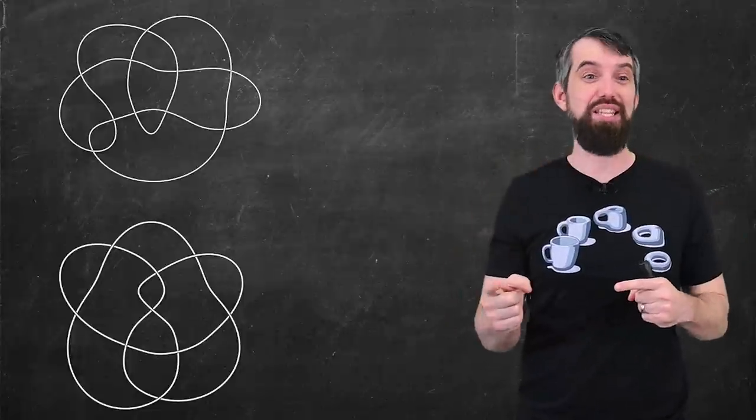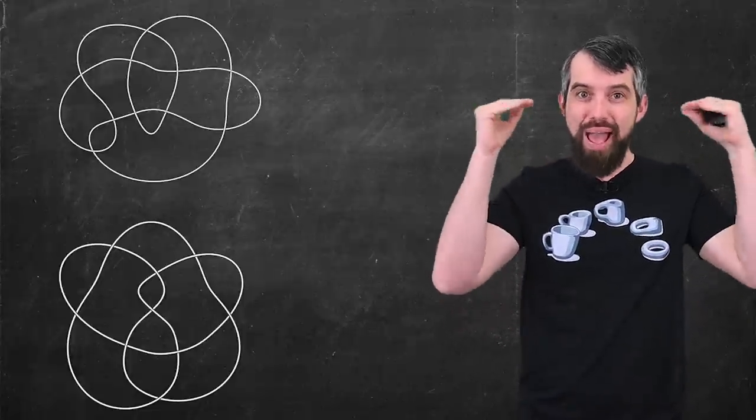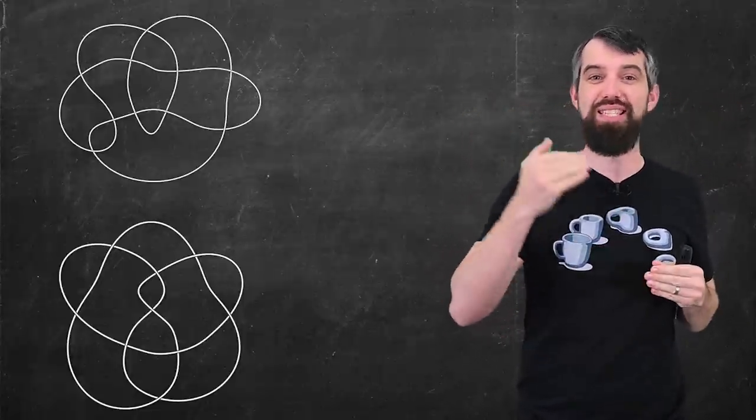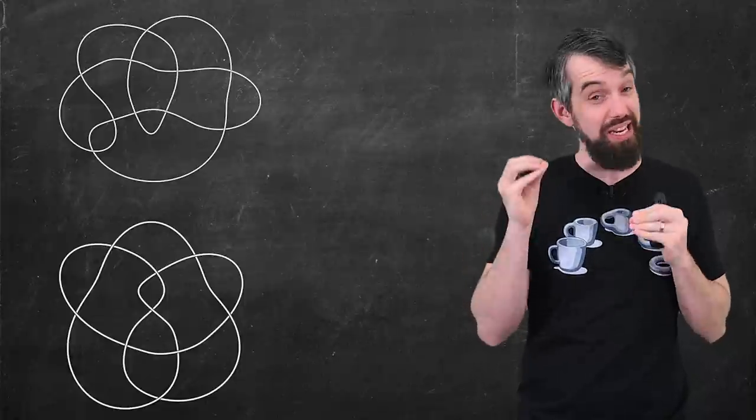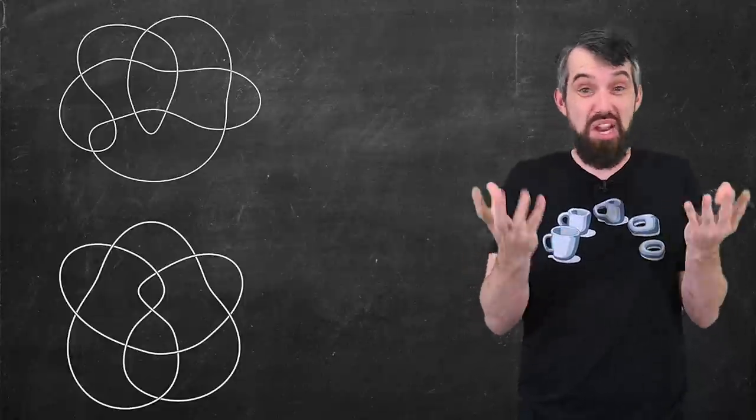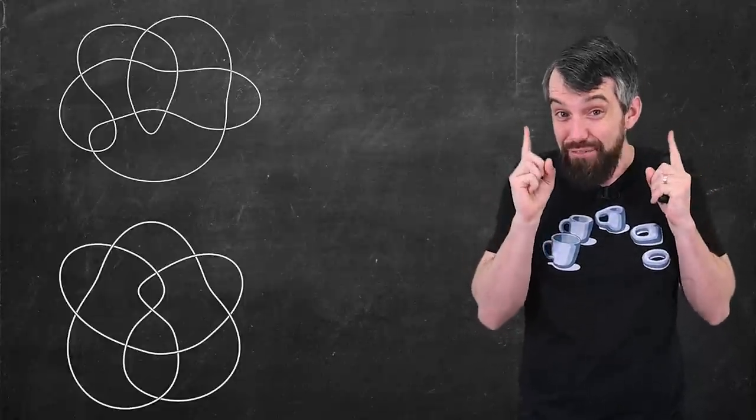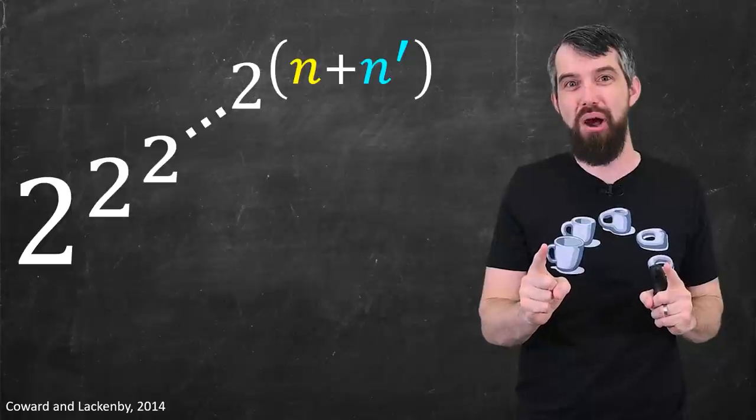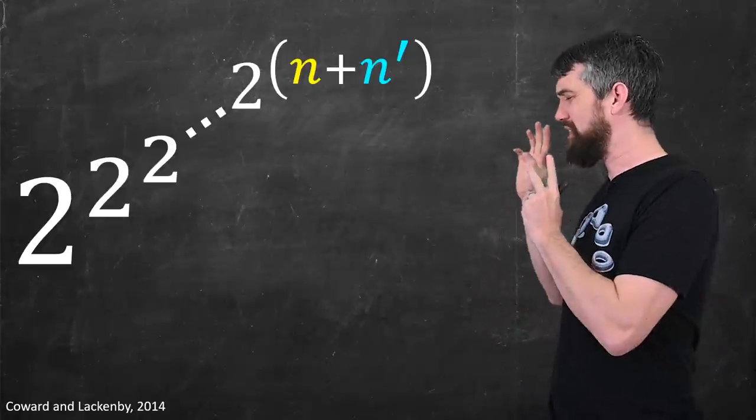So what would be really nice is if there was an upper bound, a maximum limit on how many sequences of Reidemeister moves we needed to test until we could say that no, these two knots were different. And in fact, there is an upper bound, it just really sucks.